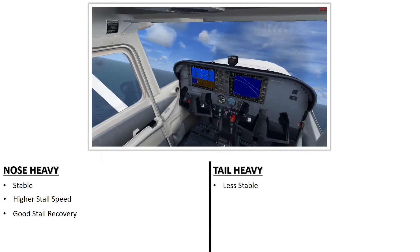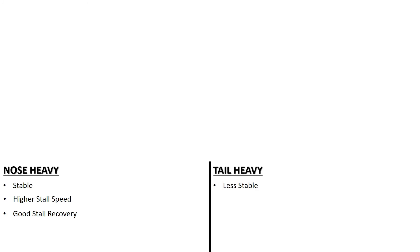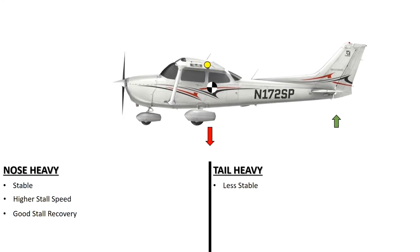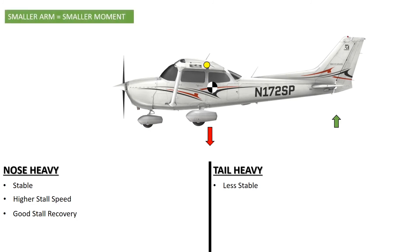Conversely, aft CG is less stable. Less elevator input is needed to restore balance as the CG is positioned close to the CP. Thus, smaller moments produce a lower angle of attack, decreasing stall speed.